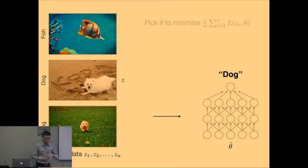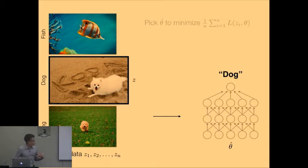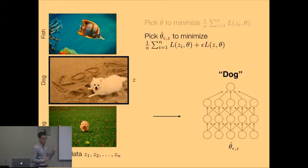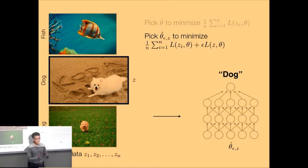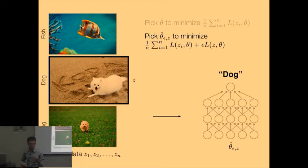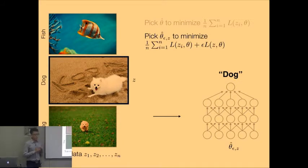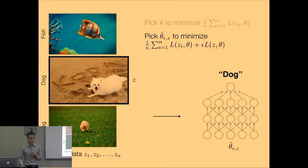Now assume you have one particular training image that you want to change the weight of — call that z. We want to make that a little bit more important and see what happens to the model. We formalize this by slightly changing the loss function: we have the original term and then we add a little epsilon times the loss on that particular image, for some small value of epsilon. You can see this as changing the training distribution — the empirical training distribution assigns 1/n mass to each training point, and here we're re-weighting it so there's epsilon more probability mass on the training example we want to upweight.